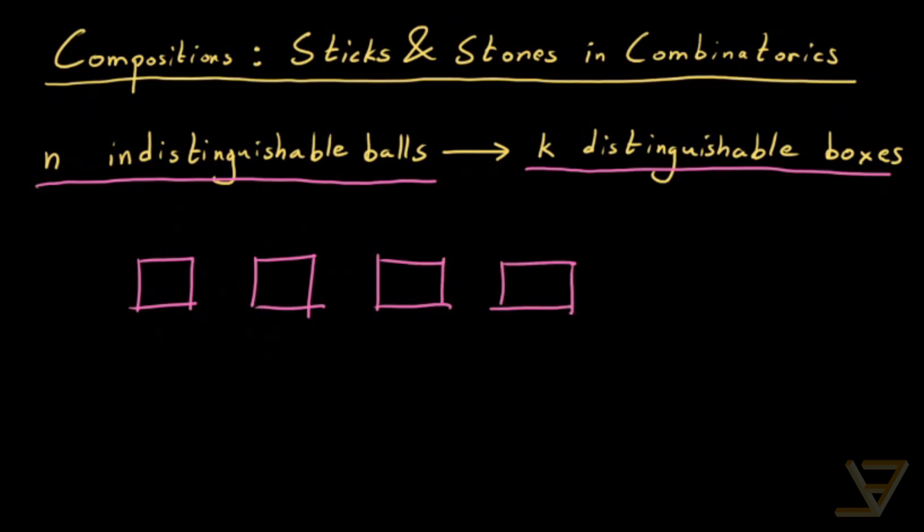Now we want to distribute the N indistinguishable balls across these boxes. Some might have two, some might have three, one might have one, there might be zero in this one. We just want to distribute the indistinguishable balls across K ordered boxes. Ordered and distinguishable is the same thing. And we want to know how many ways there are of doing this.